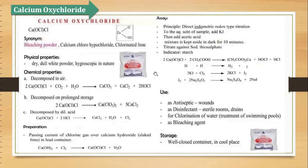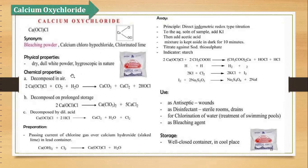Then is the last compound: calcium oxychloride. Formula: CaOCl₂. Also known as bleaching powder or chlorinated lime or calcium chlorohypochlorite. It is a dry, dull white powder, hygroscopic in nature. Physical properties: it is decomposed in air. Air mein CO₂ hai — carbon dioxide ke saath yeh react karke calcium carbonate, calcium chloride aur hypochlorite bana dega.